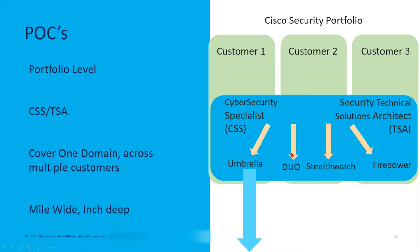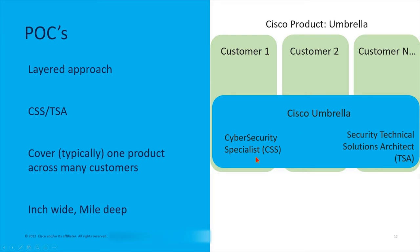Going one step further: most service layers stop at the security level, but there are a few products that have specialists for just that single product. Within the security domain there's Umbrella, Duo, Stealthwatch, Firepower (now called Security Network Analytics), ASA, and quite a few others. Some further overlays specialize in just one product, structured the exact same way — a Cybersecurity Specialist as the sales front-end and a Security TSA who specializes in just that product. These people are truly a mile deep but an inch wide, covering one product for maybe ten to twenty customers rather than just one or two.